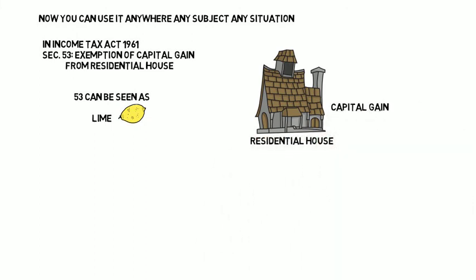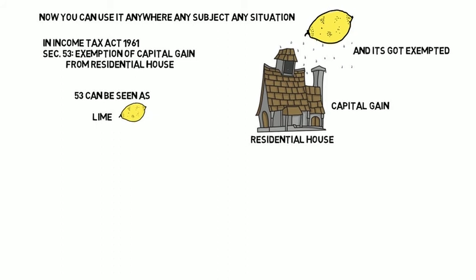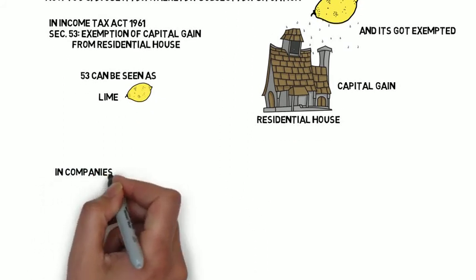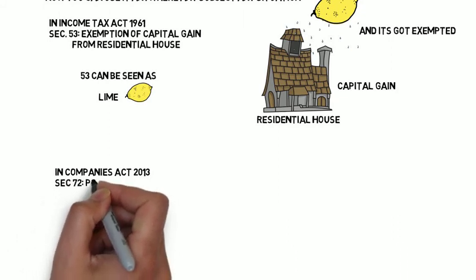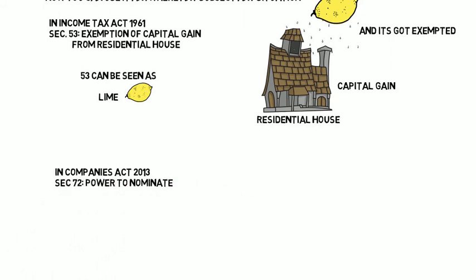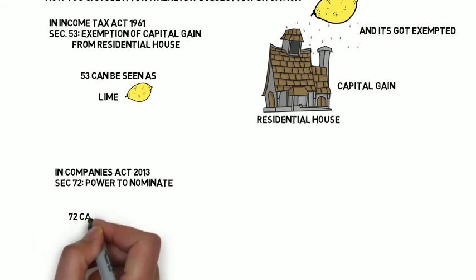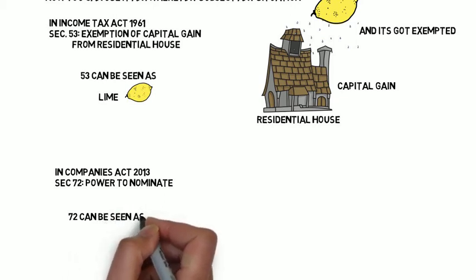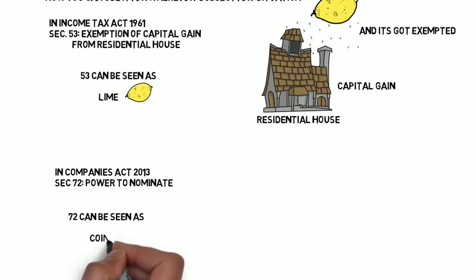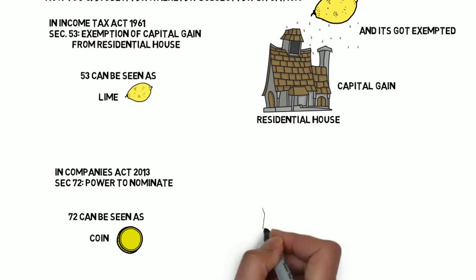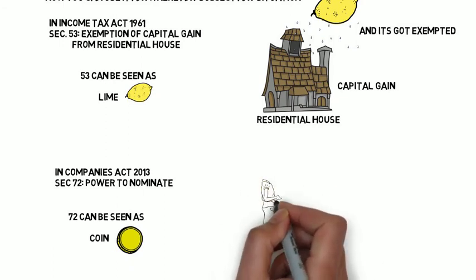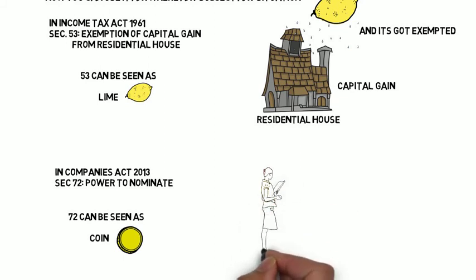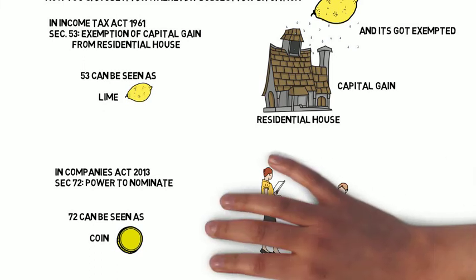Another example from the Companies Act 2013: Section 72 stands for 'power to nominate'. 72 → 7 is K, 2 is N → K-N → 'coin'. Visualize: a teacher in class has the power to nominate a student to balance on a coin. Just visualize it!